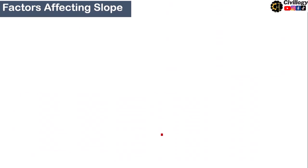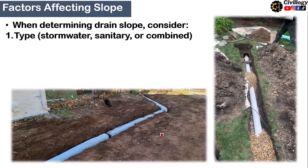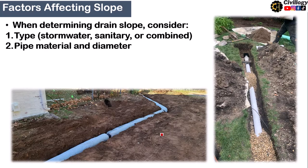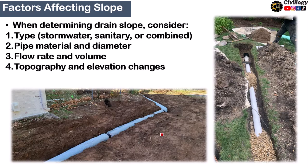The second question is that what are the factors which affect the slope? Here are some factors that when determining drain slope, consider these. The first one is type of sewer, whether the sewer is being designed for storm water only or for sanitary or for combined. The second point is pipe material and diameter also affect the slope. The third point is flow rate and volume. The fourth point is topography and elevation changes. The fifth, last but not the least, local regulations and standards are to be considered before selecting a slope for a certain area.